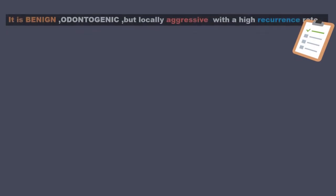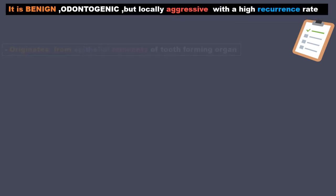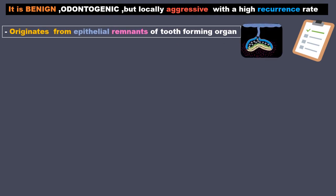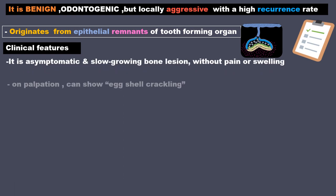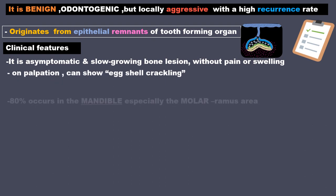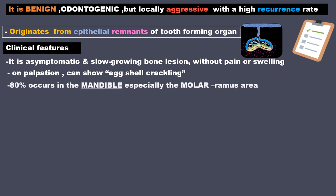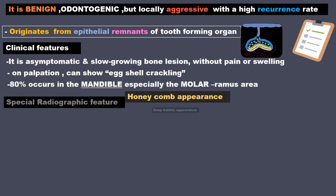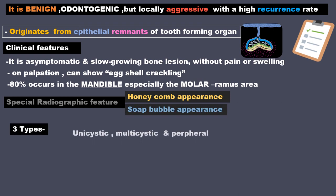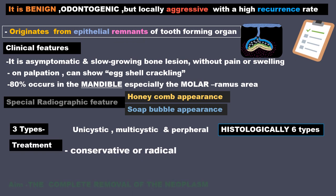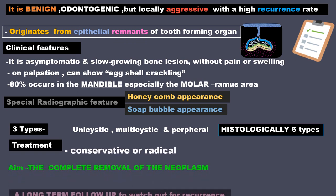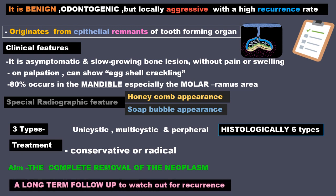Key points: ameloblastoma is a benign odontogenic but locally aggressive tumor with a high recurrence rate, originating from epithelial remnants of the tooth-forming organ. Clinical features: asymptomatic, slow-growing bone lesion without pain or swelling; palpation can show eggshell crackling sensation; 80% occurs in the mandible especially the molar-ramus area. Special radiographic features: honeycomb appearance and soap bubble appearance. Three types: unicystic, multicystic, and peripheral; histologically six subtypes. Treatment is conservative or radical; aim is complete removal of the neoplasm with long-term follow-up to watch for recurrence.